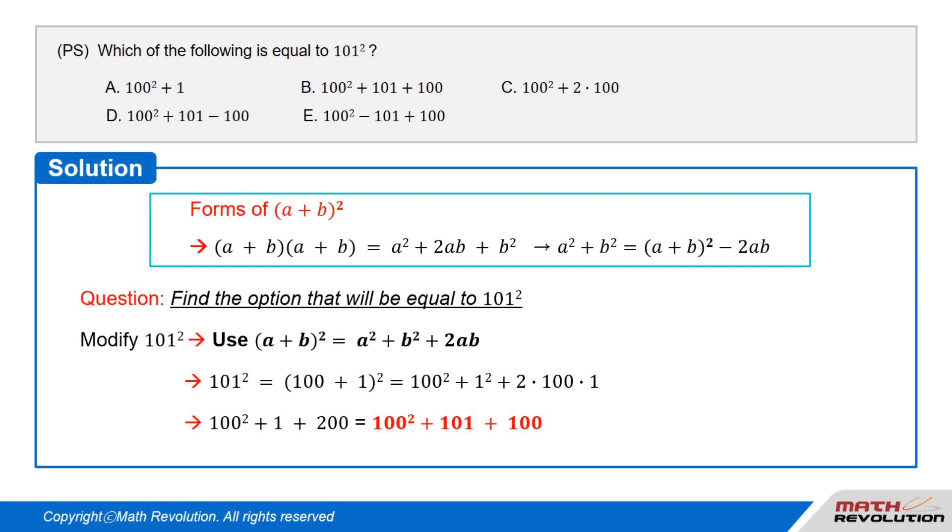This equals 100² + 1 + 200, which equals 100² + 101 + 100.